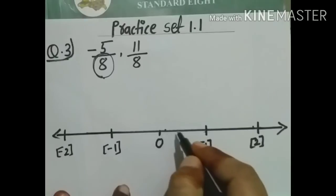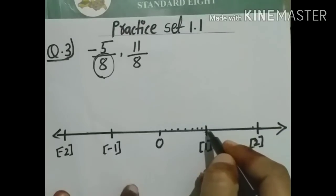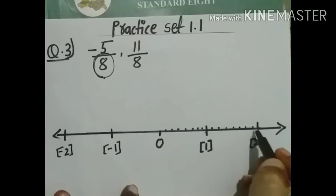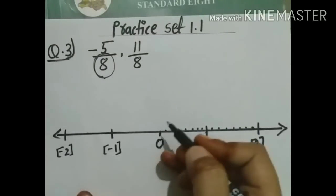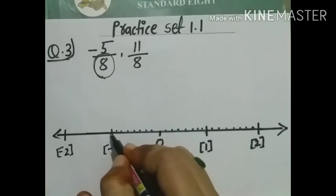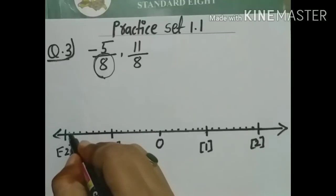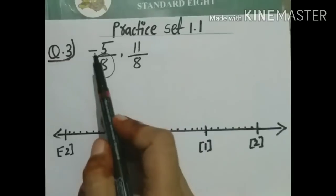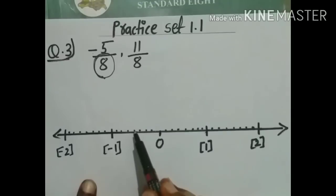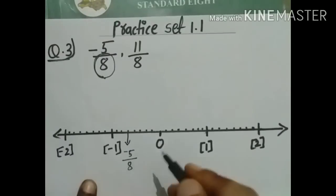Divide each unit into 8 equal parts: 1, 2, 3, 4, 5, 6, 7, 8 — do this for each unit on both right and left sides. For minus 5 upon 8, the negative number is to the left of 0. Start from 0 going left and count: 1, 2, 3, 4, 5. This is minus 5 upon 8 — do the circle.